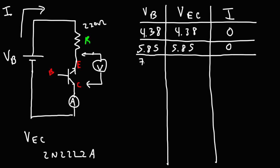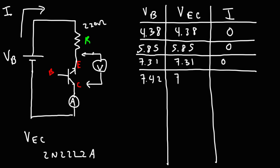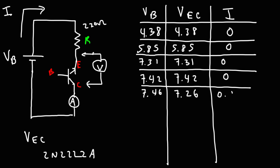Using five AA batteries, the voltage was 7.31 volts. Because the breakdown voltage was close, I replaced some old AA batteries with newer ones to get a slightly higher voltage. Replacing one battery with a newer one, I got 7.42 volts — not enough to activate the emitter-collector region for this particular transistor. Replacing another battery, the voltage was 7.46 volts, and at this point current began to flow: I measured 0.88 milliamps.